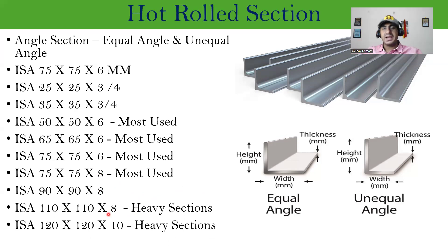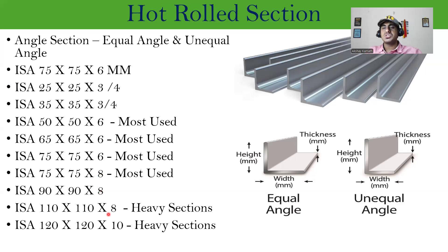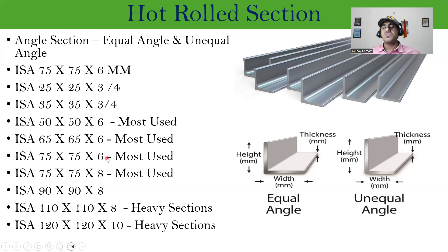In the hot roll section we have angle sections — equal angle and unequal angle. For equal angle, the normal section we use is ISA 50 by 50 by 6, then 65 by 65 by 6, then 75 by 75 by 6, and 75 by 75 by 8 is also available. If you want a higher side you can go with 110 and 120 — these are 8 mm and 10 mm thickness. Different sections are available and whichever is correct will of course be given by the structural consultant, but you should have an idea of the standard sections available.